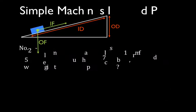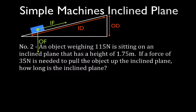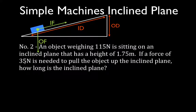Now we're going to do another problem. We're going to calculate how long the inclined plane is. We have an object that weighs 150 newtons on the inclined plane. The inclined plane is 1.75 meters high, and we know how much force we have to apply: 35 newtons. We want to figure out how long the inclined plane is.